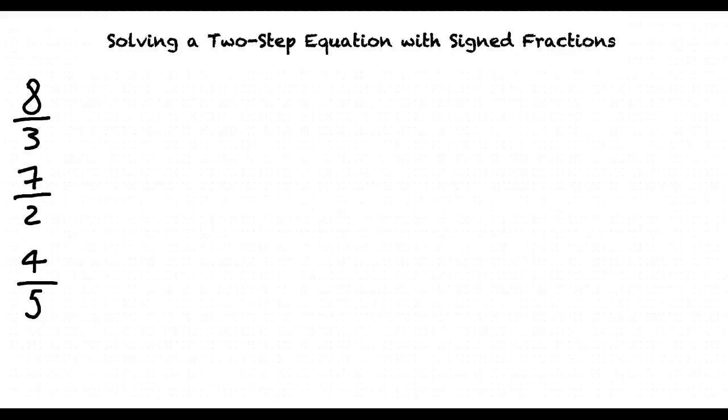The denominator is the bottom number, right? That's right. So to find the least common multiple of the denominators, we take the three denominators, 3, 2, and 5.